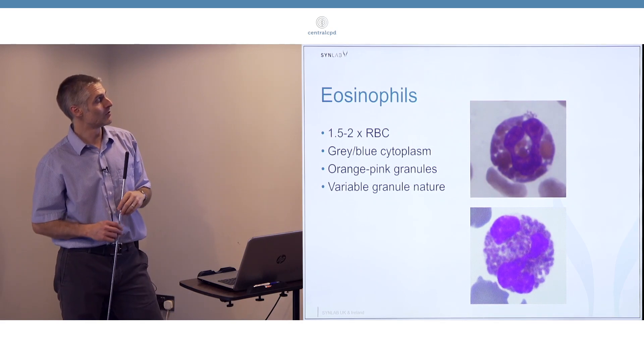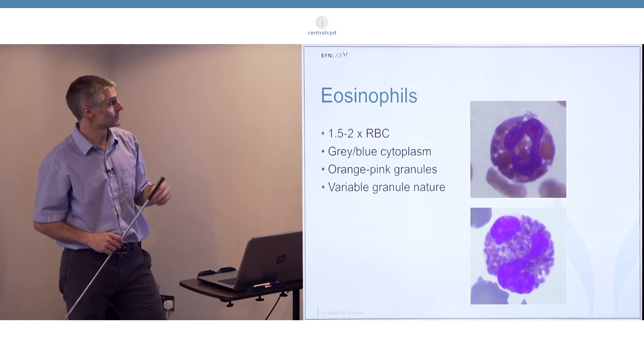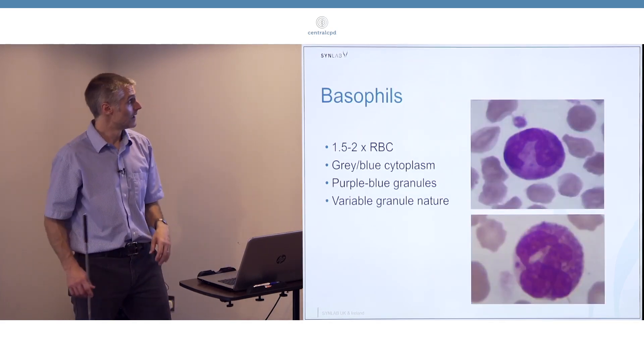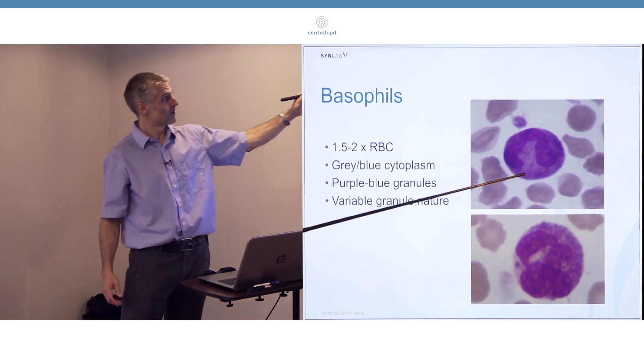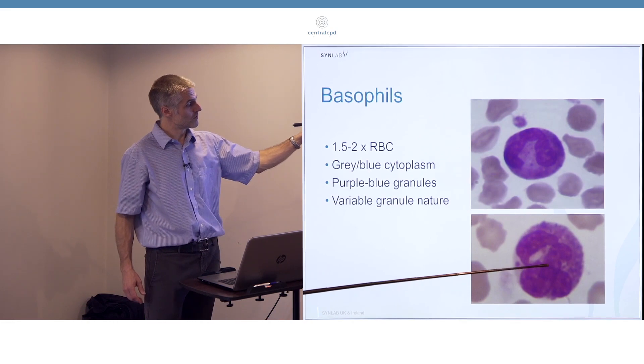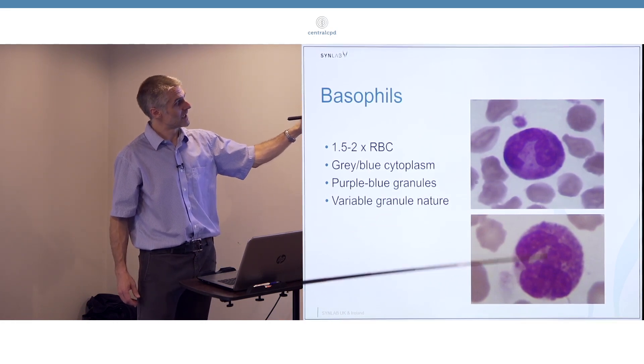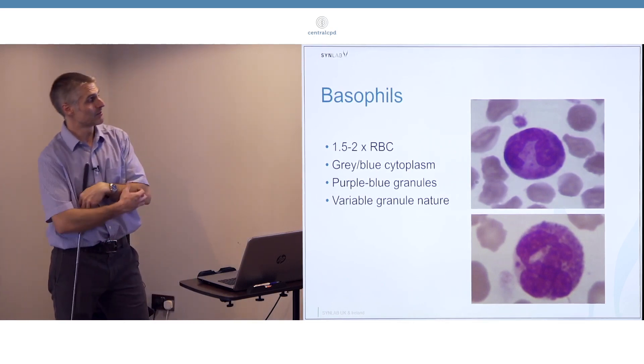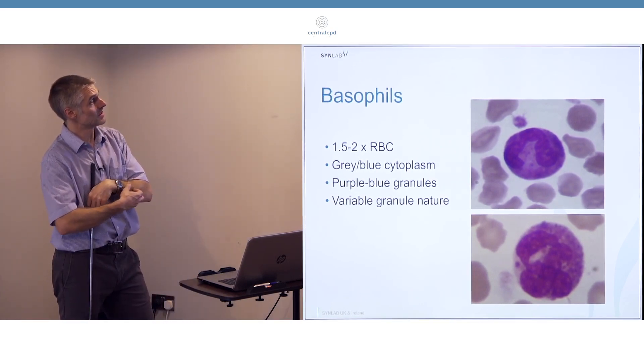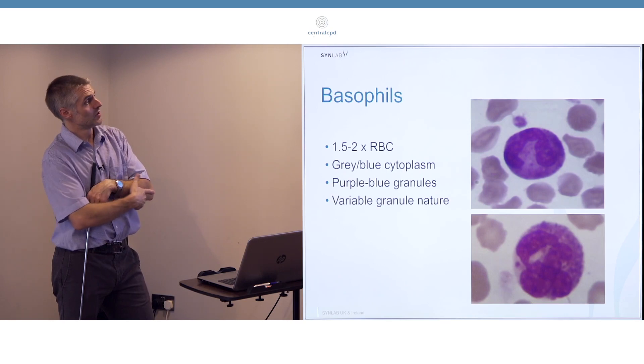Basophils, again one of the granular sites, more regular in a dog, more uniform and denser in a cat. But now rather than being orangey reddish brown, they're now kind of pale pink, purple, lilac, magenta, depending on stain, species, and even individual.